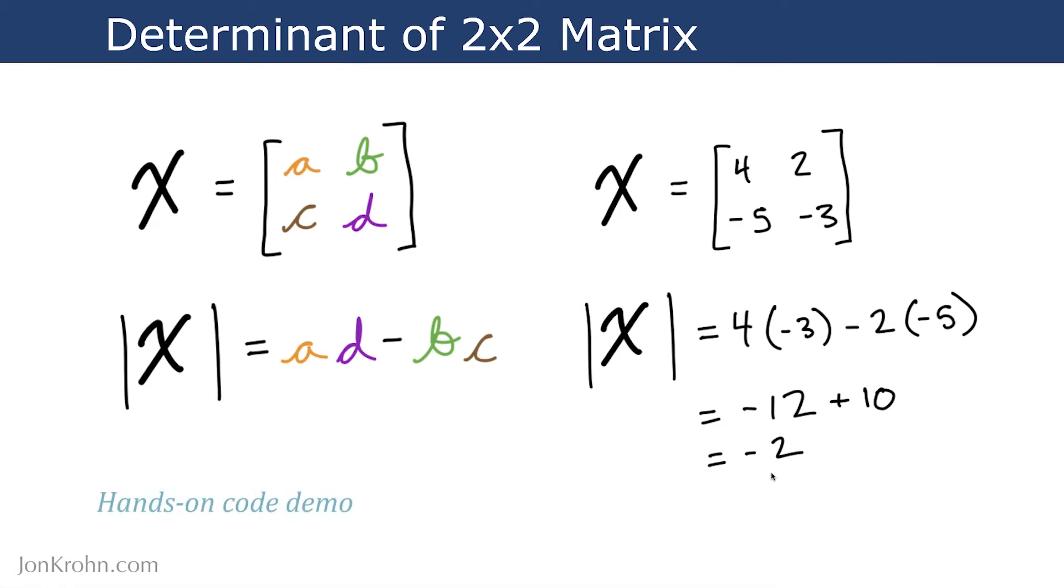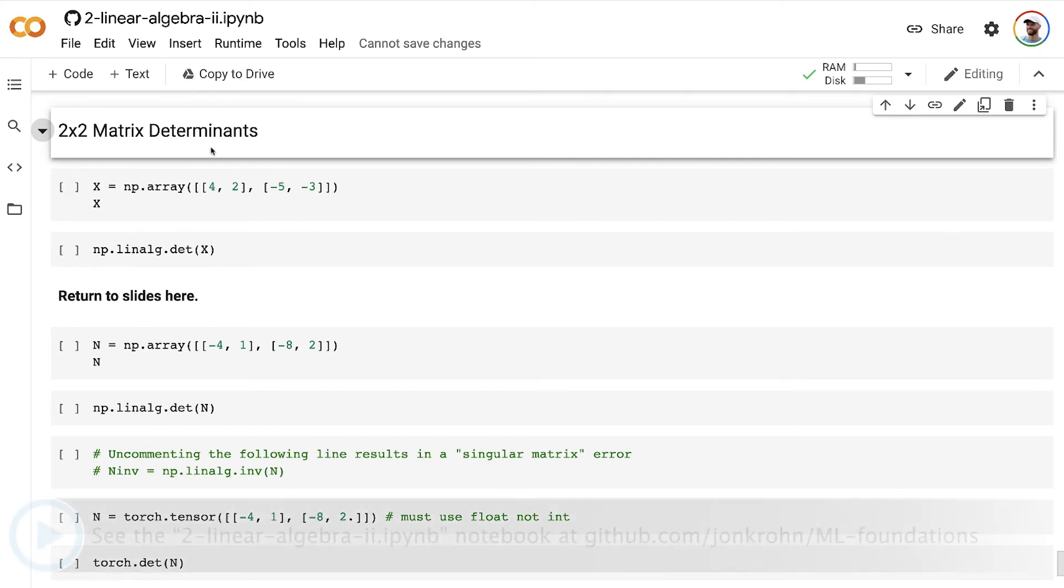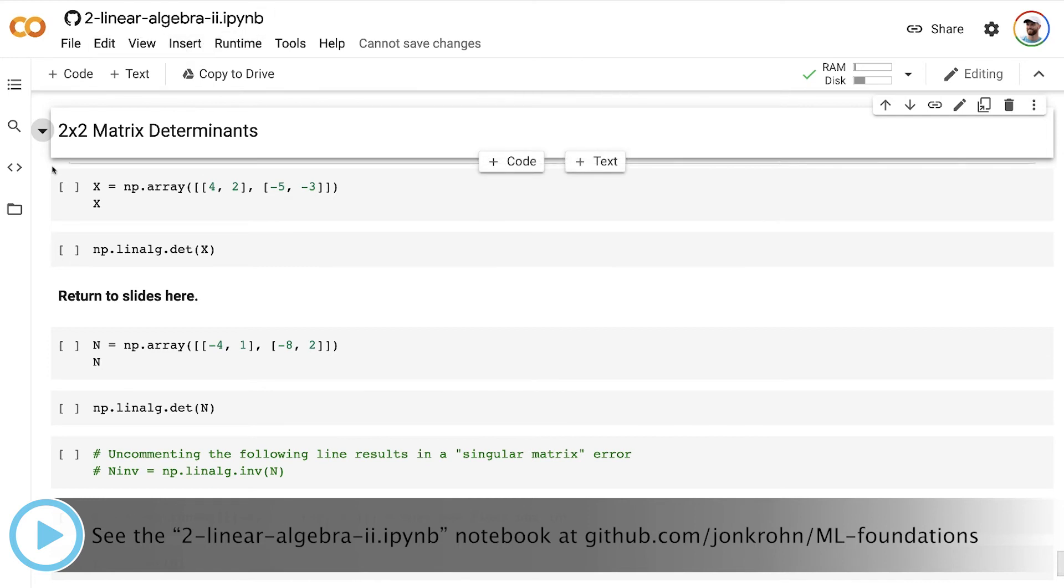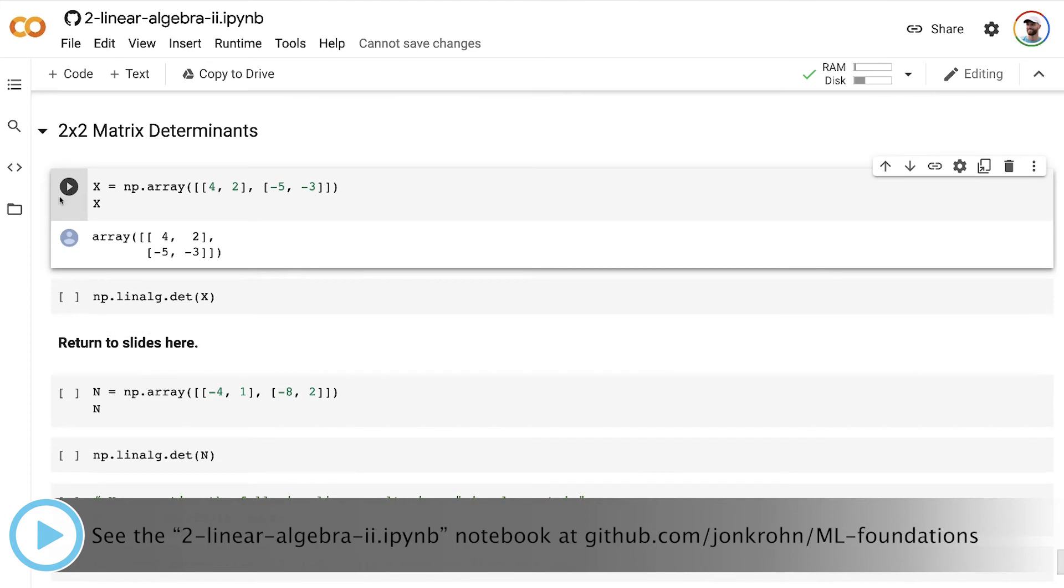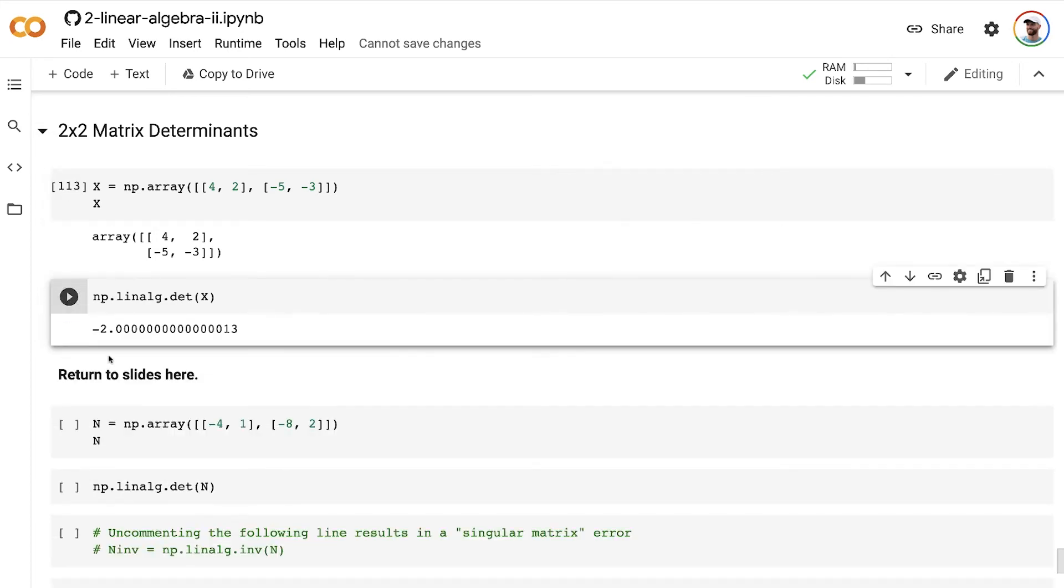Let's look at a hands-on code demo. All right, so we're now in the 2 times 2 matrix determinants section of our linear algebra 2 notebook, and let's create the same matrix that we had on the slide, and we can use the numpy det determinant method from the linear algebra module.